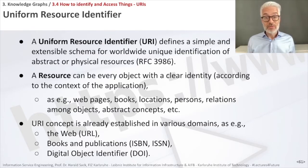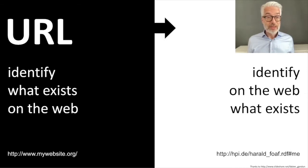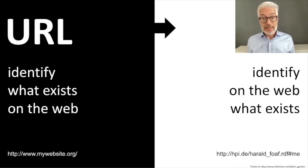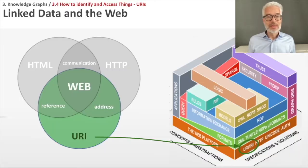URI concepts are already established in various domains. On the web, a URL — Uniform Resource Locator — is a web address. Also for books, URIs are implemented: you might have heard of ISBN and ISSN, and also for other digital objects there is the Digital Object Identifier, which is a URI. For a general difference: a URL identifies what exists on the web — any kind of web document. The URI identifies on the web what exists. You have to distinguish between the reference of the thing in the web and the real thing. You might use the reference on the web for a real thing to make statements about it. This is the URI — also the basic layer for the web of data.